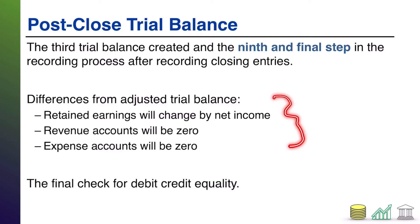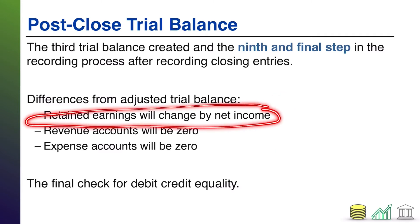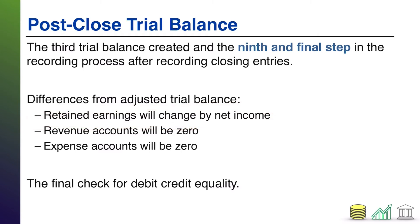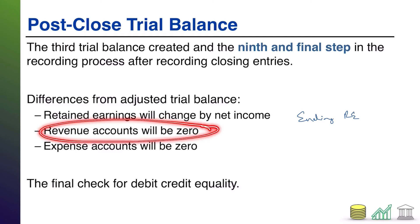And those impacts will be very specific. Retained earnings will be updated to reflect ending retained earnings. Every other trial balance shows beginning retained earnings. Once you've hit post-close, you update retained earnings for ending retained earnings. And as part of getting to ending retained earnings, all the revenue accounts have gone to zero, all the expense accounts have gone to zero. That's your closing entries that accomplish all of this.